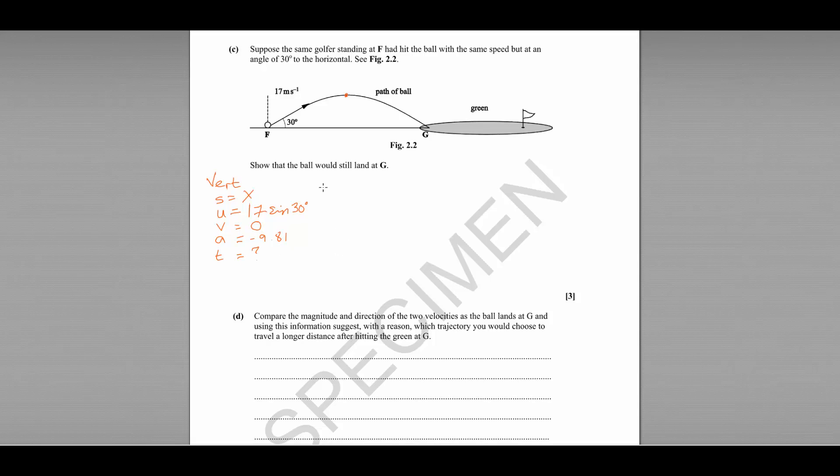So we can use V equals U plus AT, rearrange to find T is V minus U divided by A. V is zero. So we'll end up with minus 17 sine 30 divided by minus 9.81. That gives us a time of 0.866 seconds. Now that is the time it takes to reach the top of its path.